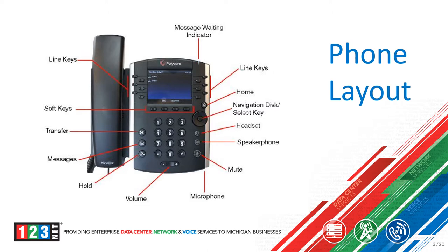When you are not on a call and you press the volume buttons, it will adjust the ringtone of your phone — so when someone calls into your phone and it rings, it will adjust that volume. Moving over to the hold button: when you are on a call and you wish to place a call on hold, you will press that hold button. The caller will then hear the default hold music until you press that button again to resume the call.